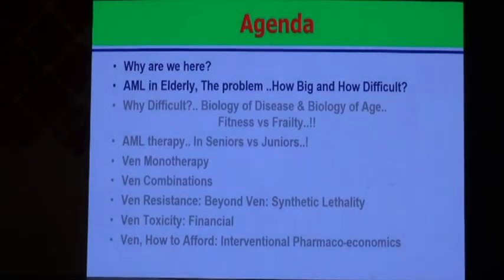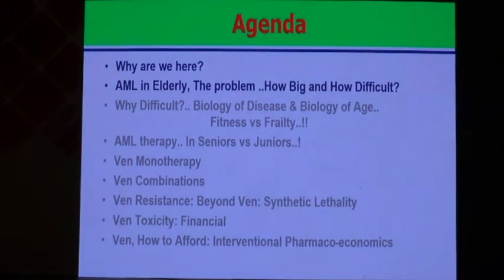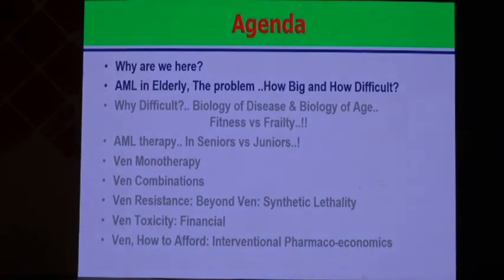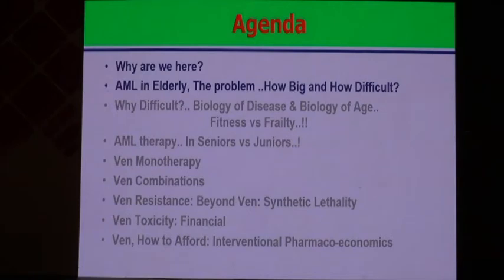The agenda covers: elderly AML — what is the problem and how big and difficult it is; then an overview of AML therapy focusing on the elderly; then to discuss one of the new innovations in acute myeloid leukemia — apoptotic inhibitors or BCL-2 inhibitors; and then how to use these expensive drugs in Egypt.